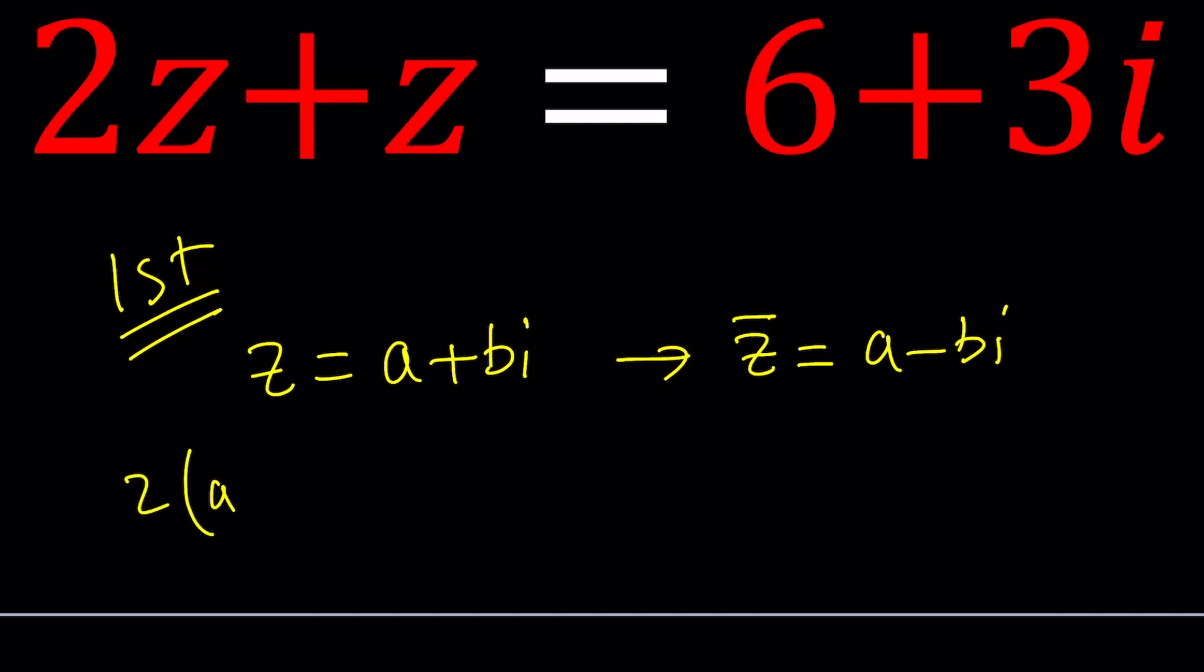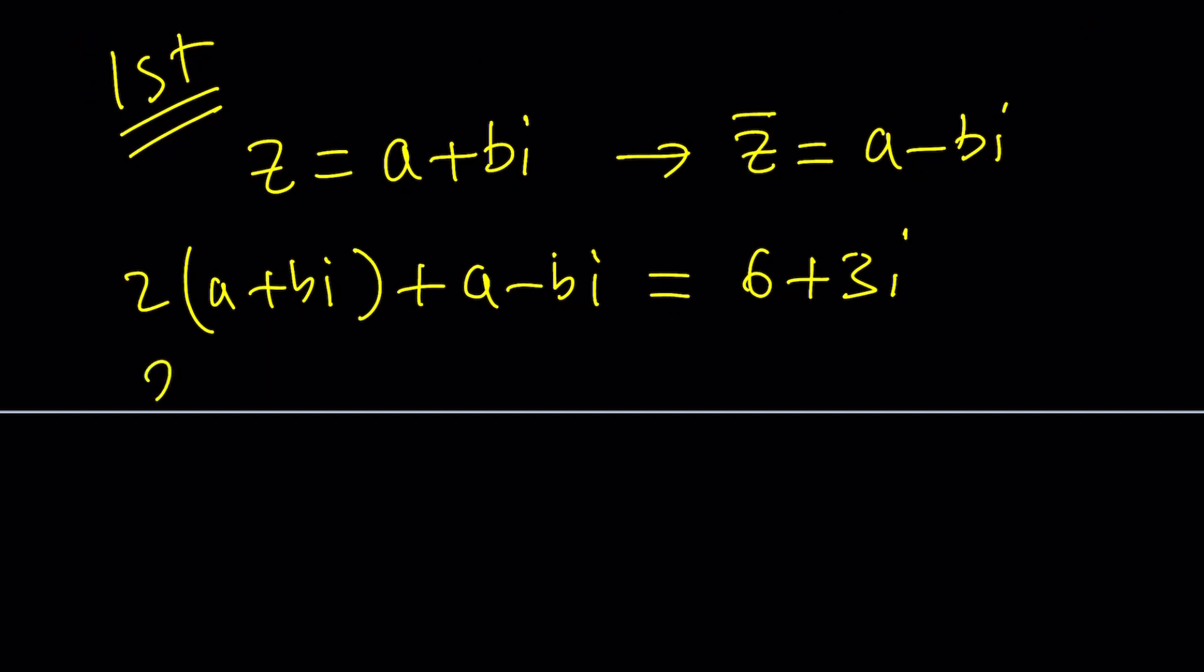2 times Z plus Z bar equals 6 plus 3i. Let's go ahead and distribute 2a plus 2bi plus a minus bi equals 6 plus 3i.